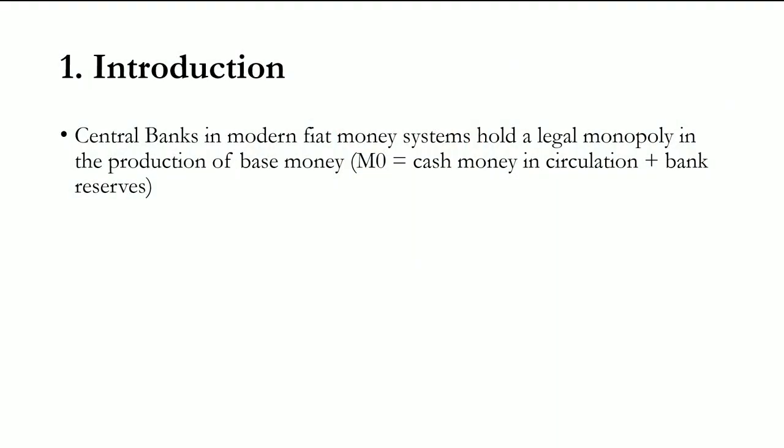So, central banks — what are central banks? We all have an intuitive understanding: they are the institutions in charge of monetary policy. In the modern fiat money system, central banks are essentially defined by a legal monopoly in the production of base money. By base money, often called M0, we mean cash in circulation — cash in private hands, for example in your wallets or under your pillow at home — and we mean bank reserves.